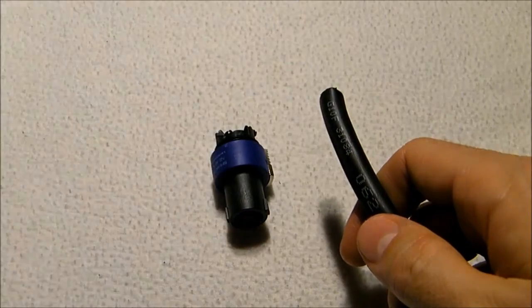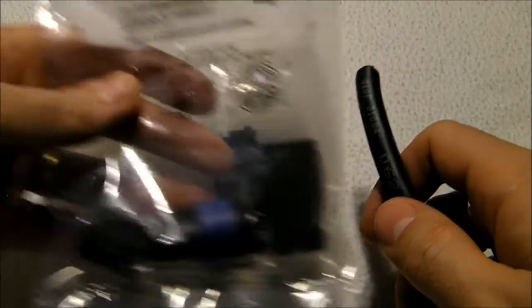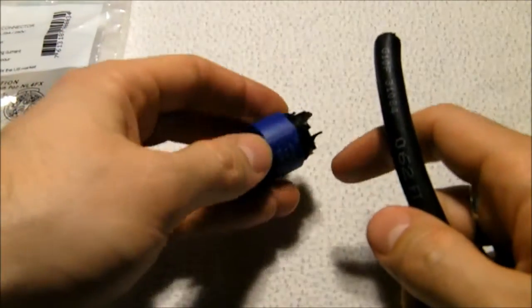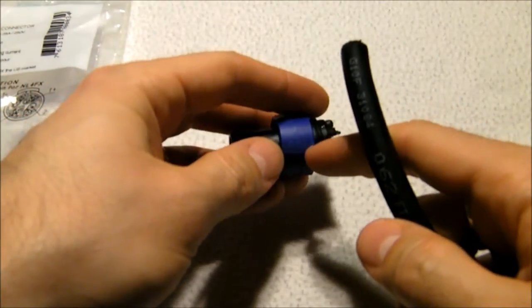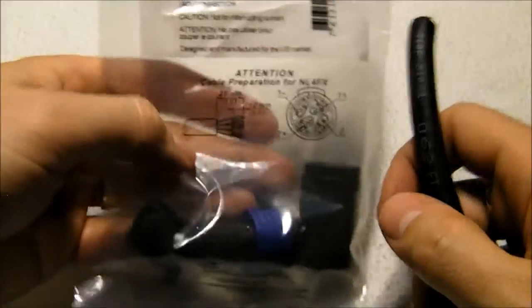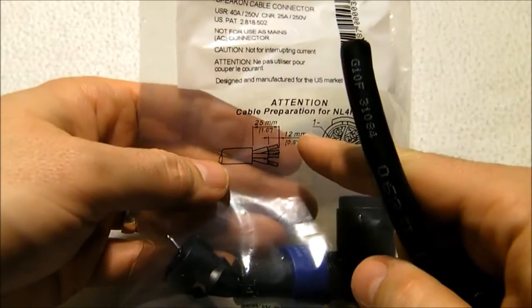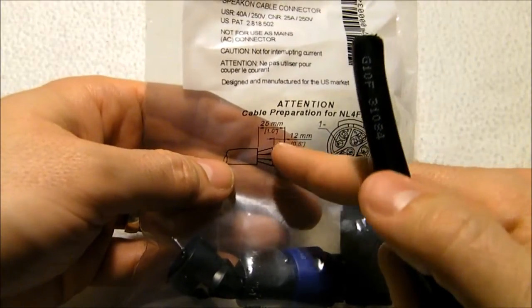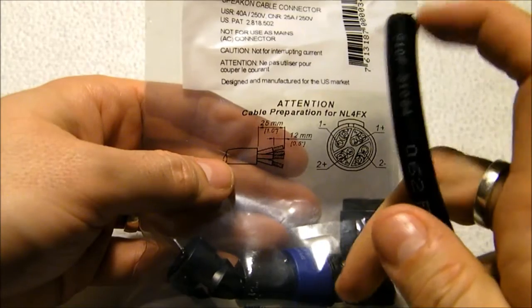Now we need to strip the wire. The nice thing about these connectors is that both on the bag and on the connector housing itself, there's a little guide that tells you exactly how much of the wire you need to be stripping. In the case of this wire, we need to cut one inch of the external sheathing and half an inch of the internal wires.